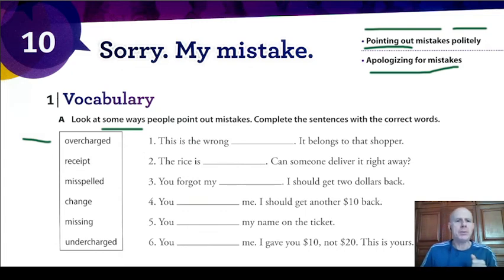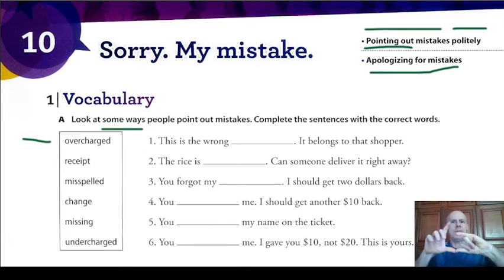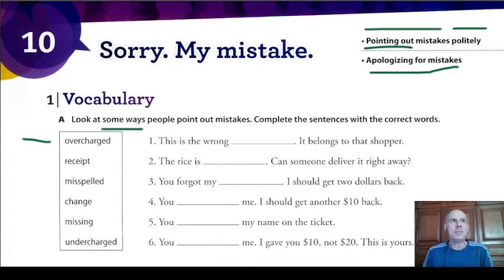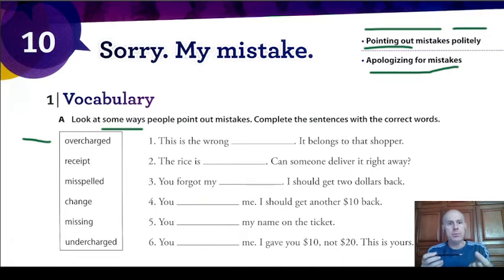Change — you give some money for something, and the person gives you back the difference. For example, imagine that you pay for this pencil with a bill of ten reais, and it's only one real. The person gives you nine reais of change. Missing — imagine the person gives you back only eight reais, then you can say, 'Oh, there's one real missing,' because you want the correct change.